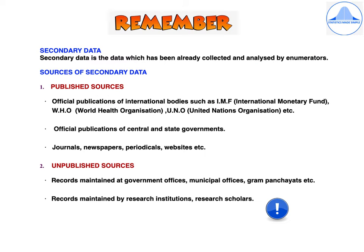Secondary data is data which has already been collected and analysed by enumerators. Published sources include official publications of international bodies such as the IMF (International Monetary Fund), WHO (World Health Organization), UNO (United Nations Organization), official publications of central and state governments, journals, newspapers, periodicals, and websites. Unpublished sources comprise records maintained at government offices, municipal offices, gram panchayats, and also records maintained by research institutions and research scholars.